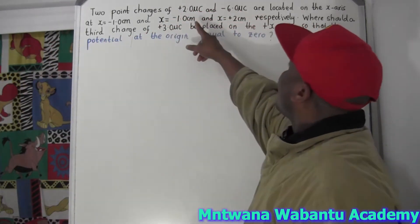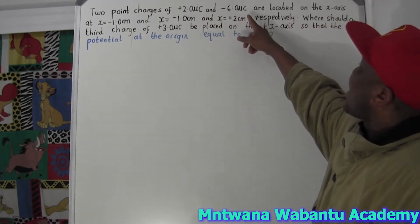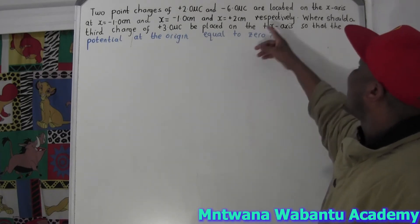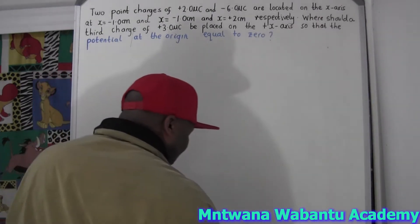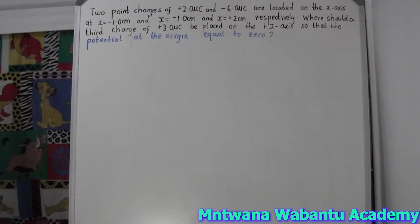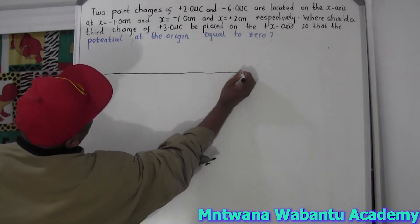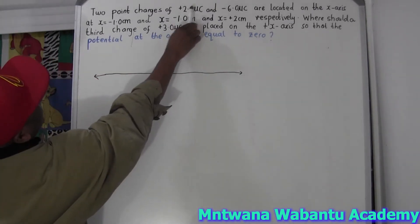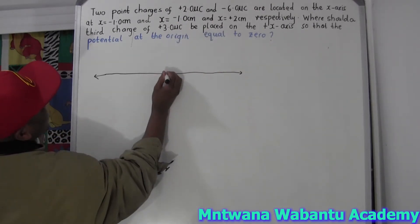So this is a two-point charger of positive two micro coulomb and negative six micro coulomb. They are located on the x-axis. We can draw the x-axis here quickly. The first charge is positive two and the second is negative six, but we don't know their exact positions yet.